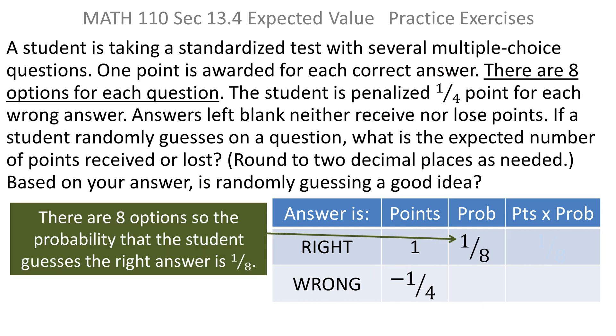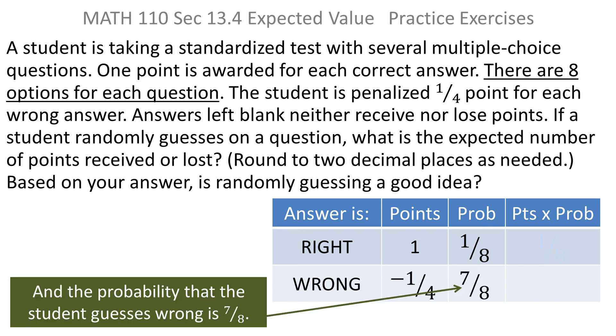Well, look what it says. It says there are eight options for each question, so you've got a one out of eight chance. If you don't know the answer, you don't have any idea what's right and what's wrong, and you're just guessing, you have a one-eighth chance of guessing right. That means, of course, that you have a seven-eighths chance of guessing wrong.